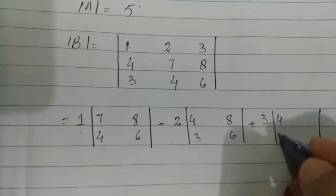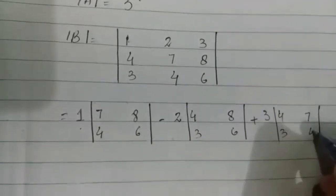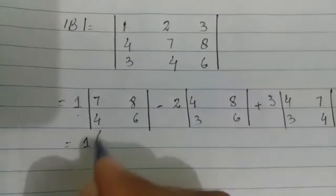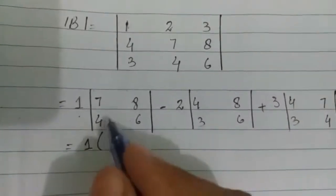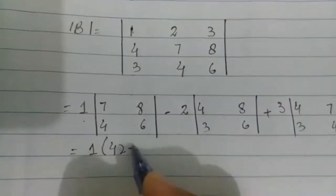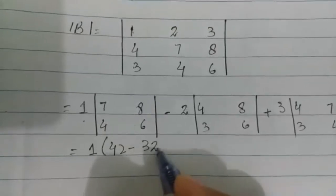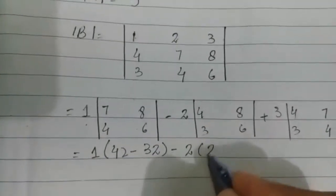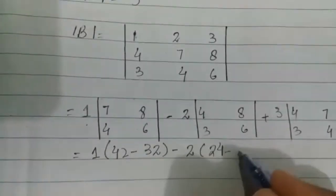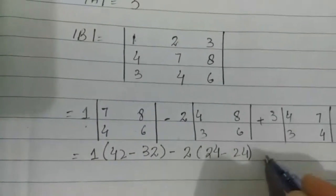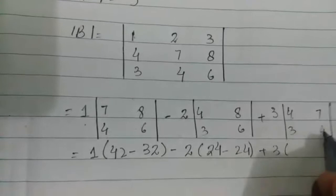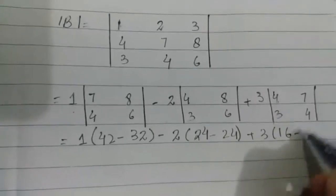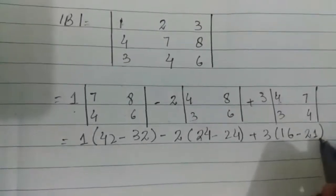Now computing each 2×2 determinant: for the first, 7×6 = 42 minus 8×4 = 32, giving 42 − 32 = 10. For the second, 6×4 = 24 minus 8×3 = 24, giving 24 − 24 = 0. For the third, 4×4 = 16 minus 7×3 = 21, giving 16 − 21 = −5.